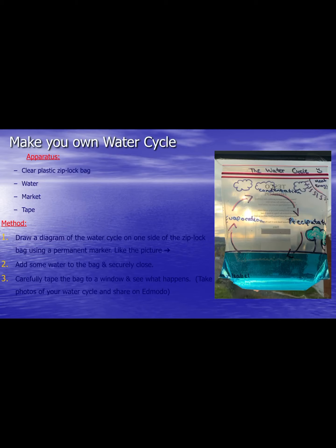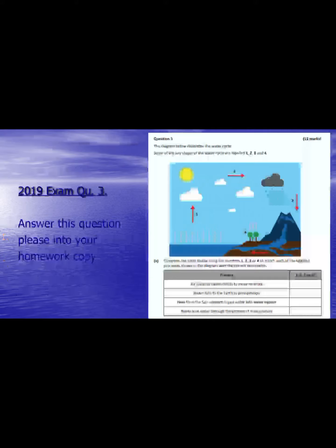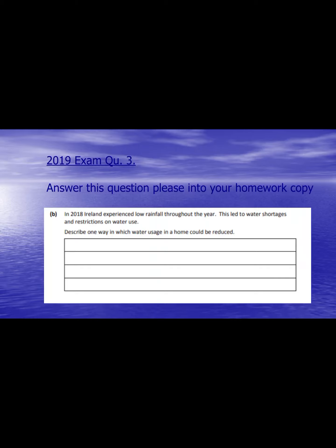Precipitation is the main process that takes water from the air. You could make your own water cycle model — get a clear plastic zip-lock bag, draw the water cycle on the outside with a marker, add a little bit of water, and seal it to a window. You'll see the stages of the water cycle happening.